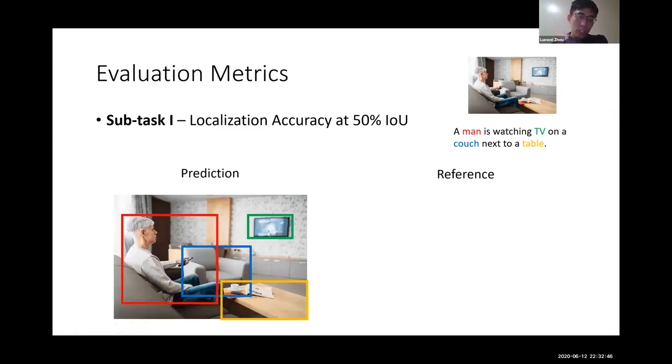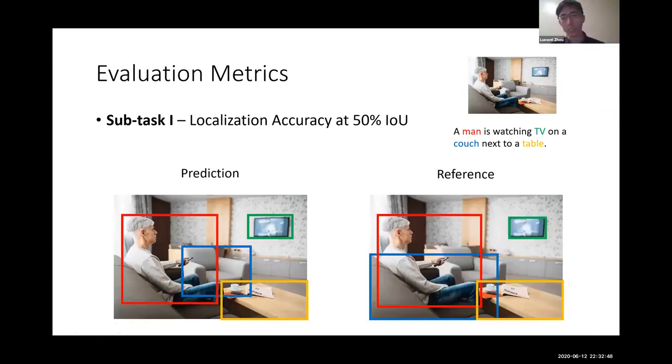The red box corresponds to the first word, 'man', in the caption. Comparing the prediction and reference, the red box has over 50% IOU with the reference red box, so that's a correct prediction.